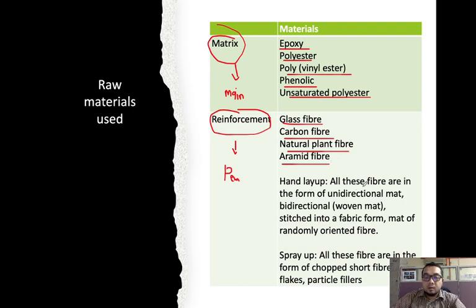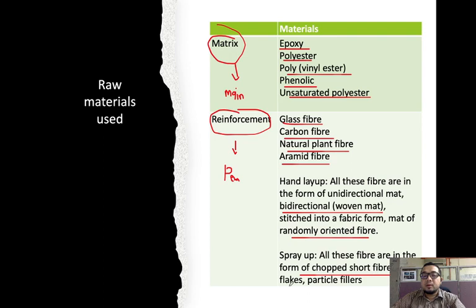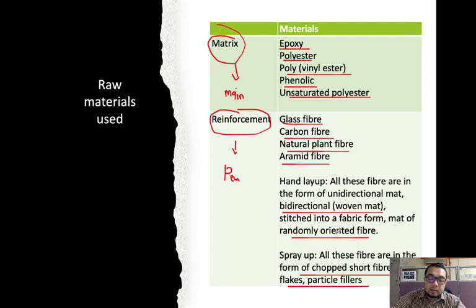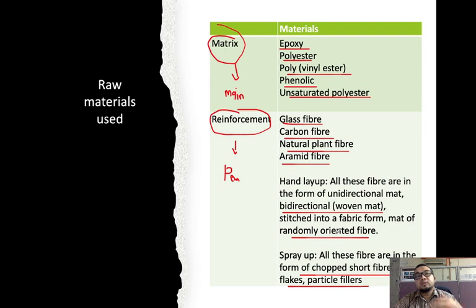For hand layup, all fibers are in the form of unidirectional matte, bidirectional (woven matte), or stitched into a fabric form made of randomly oriented fiber — these are continuous reinforcements. For spray-up, all fibers are in the form of chopped short fiber, flakes, and particle filler — particulate or short fiber, not long fiber. So if your reinforcement is short fiber, particulate, or powder, the suitable open mold process to use is spray-up.